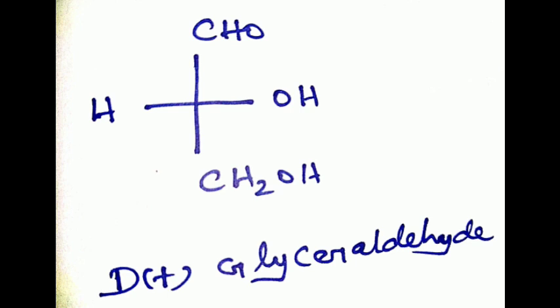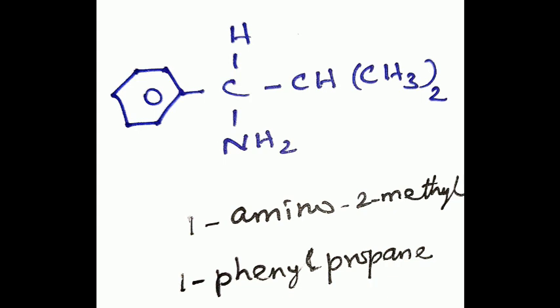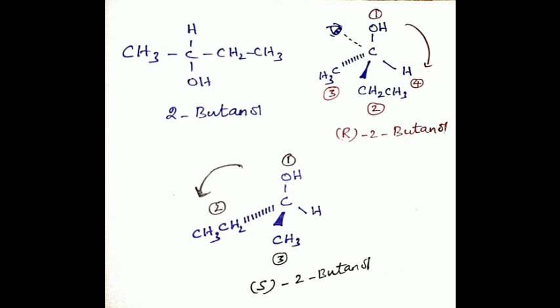The CHO takes priority over the CH2-OH. The complete sequence is OH, more than CHO, more than CH2-OH, and hydrogen. Similarly, in 1-amino-2-methyl-1-phenylpropane, the phenyl takes priority over the isopropyl but not over nitrogen which has the highest atomic number. So the sequence is NH2 group, phenyl group, propyl group, and finally hydrogen atom.